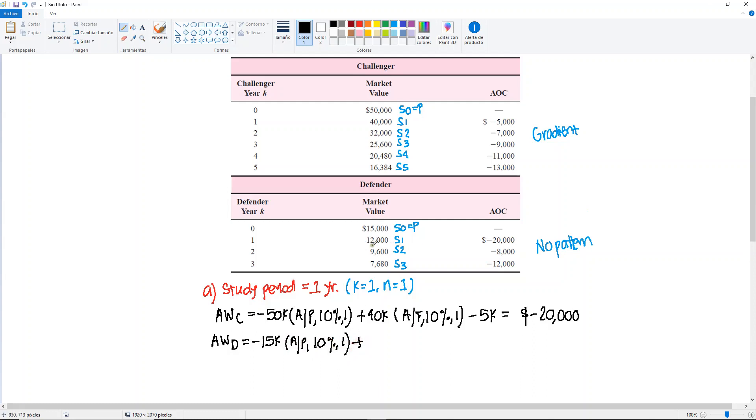find A given P, 10%, also one, plus 12,000, find A given F, 10%, and one, and same thing, we only have one year of annual operating cost, so that means that we just subtract the $20,000.